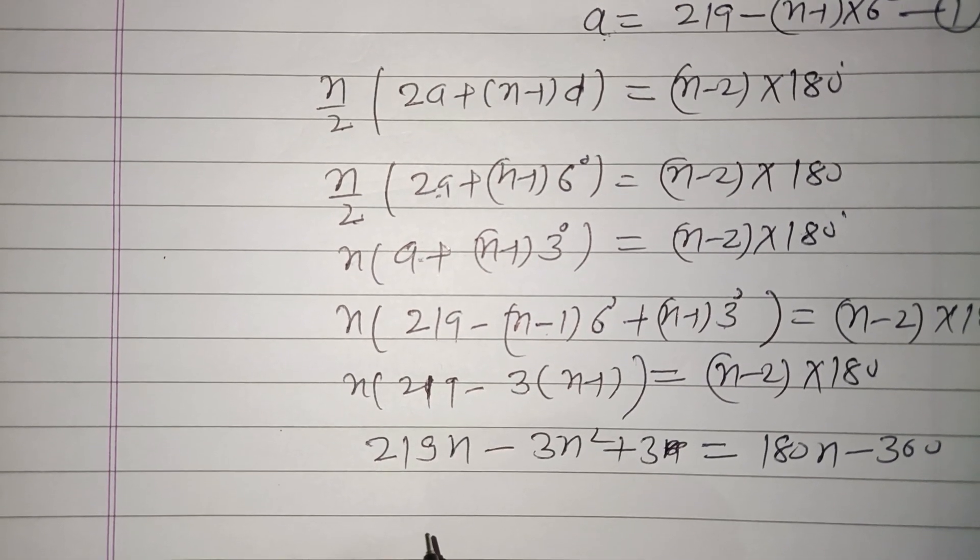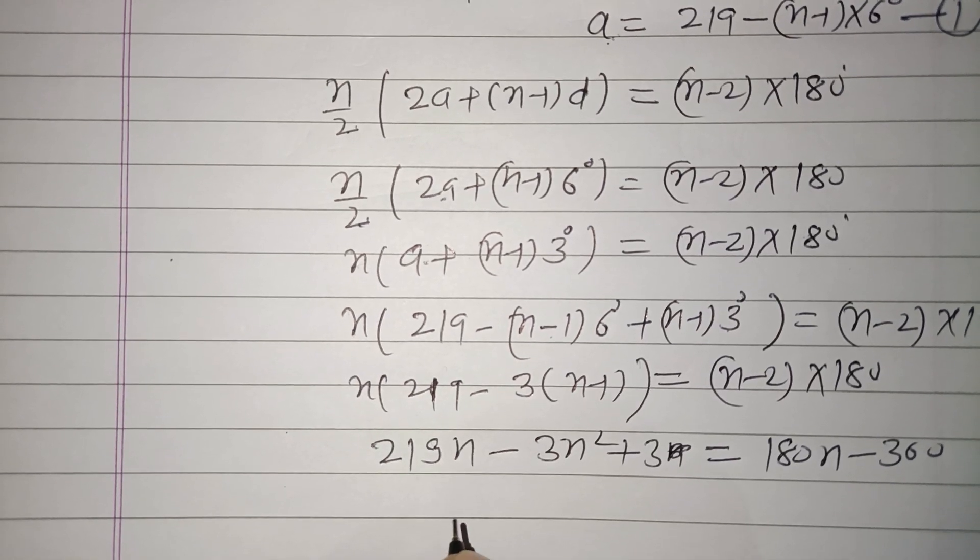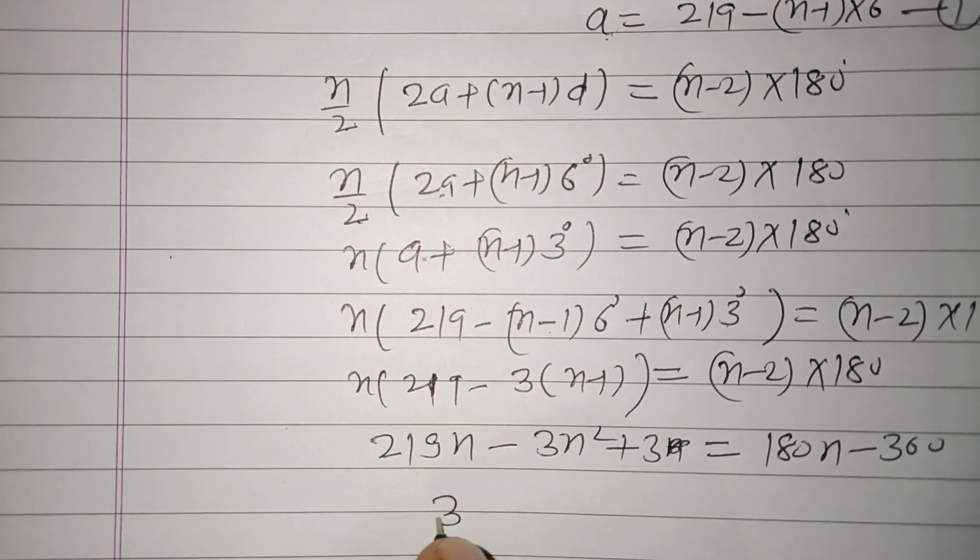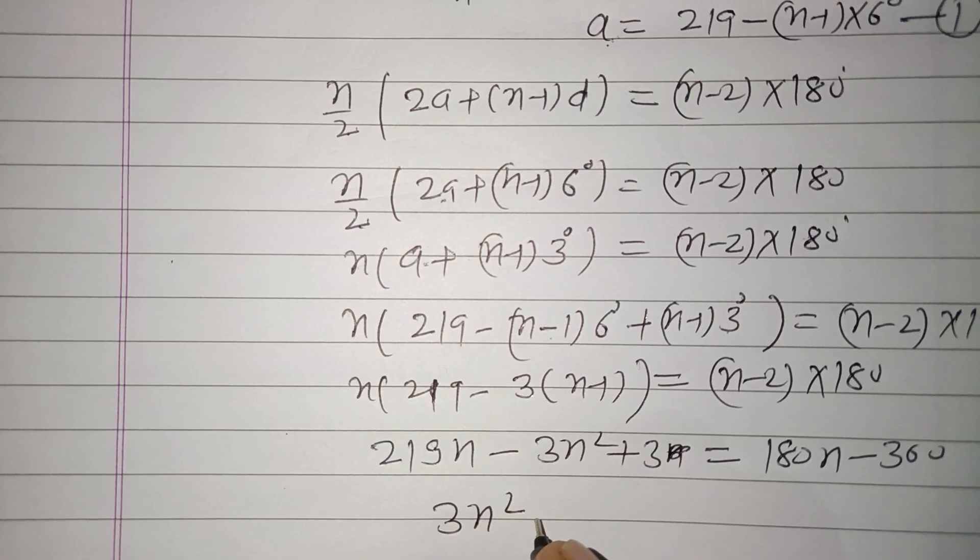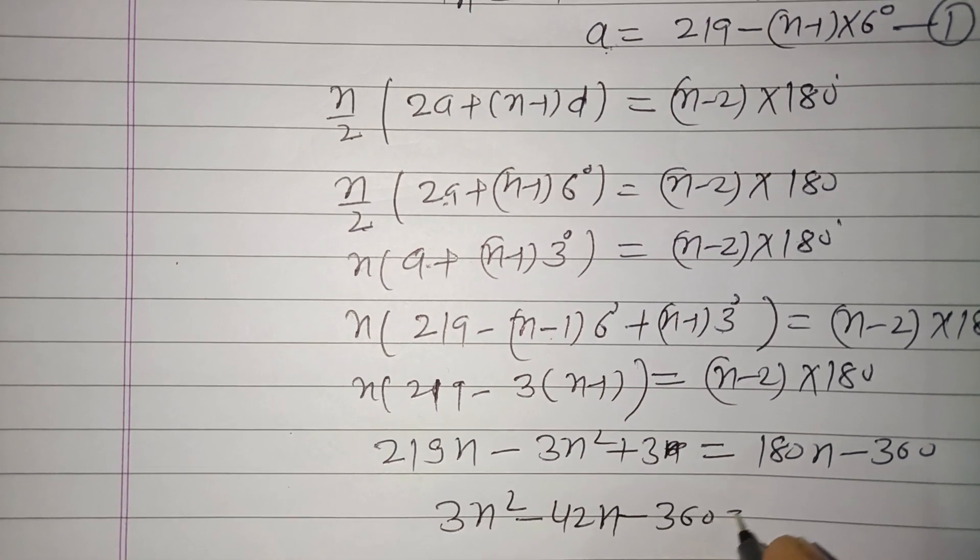Taking everything to one side, we get an equation. After solving, we get 3n² minus 42n plus 360 equals 0.